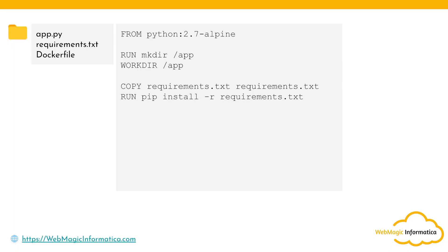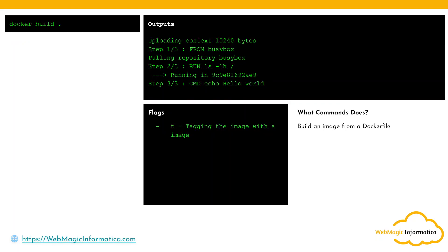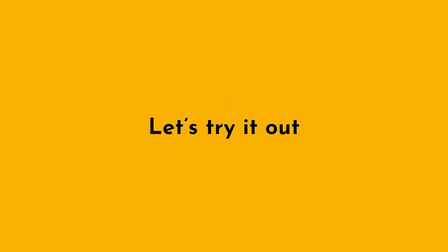We then copy `app.py` into the app directory, optionally set a label with maintainer information (webmagic informatica, email, version), and finally run Flask — a Python web application framework — on `0.0.0.0` exposed on port 5000. To build the image: `docker build -t web_app .` — the dot means the Dockerfile is in the current directory, and `-t` tags/names the image.